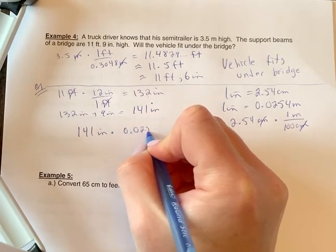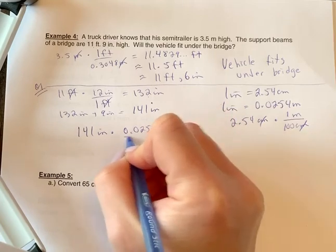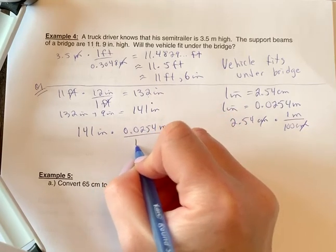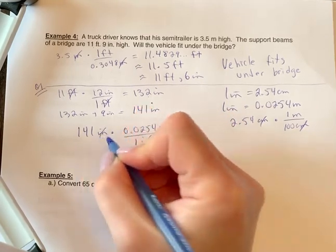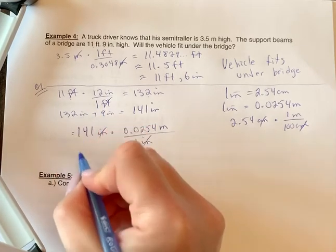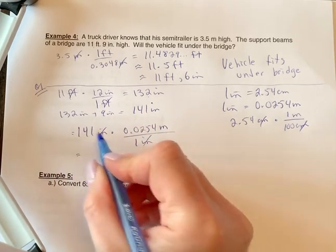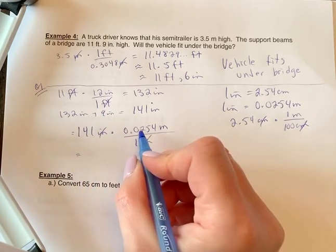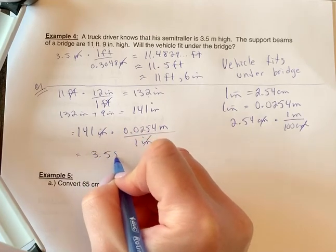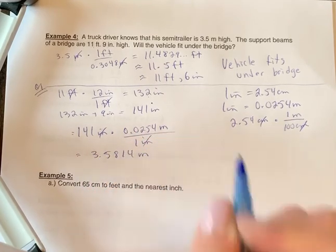So one inch is equal to 0.0254 meters. So I want my answer in meters. So 0.0254 meters divided by one inch cancel. So again, unit conversion ratio is always going to help me out, new units over old units. 141 times this number, you put that in your calculator, you're going to get 3.5814 meters.